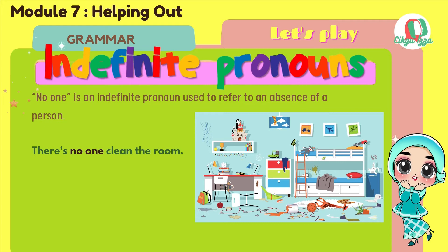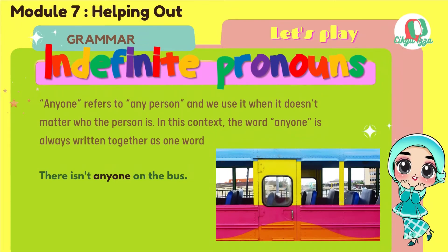No one is used to refer to an absence of a person — tiada orang, tiada sesiapa. For example: There's no one to clean the room. Anyone refers to any person, and we use it when it doesn't matter who the person is. The word anyone is always written together as one word. For example: There isn't anyone on the bus.